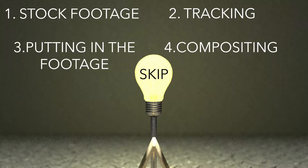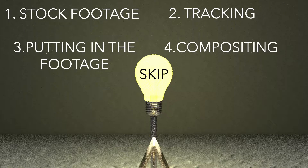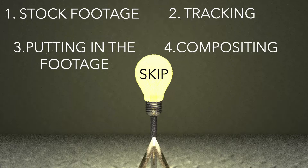Before we begin, this video is actually going to be split into four parts. The first will be finding effects in stock footage. The second will be about tracking the point of the gun so that we can apply the effect on it. The third will be actually applying the effect, and the fourth part will be compositing tweaks such as having flashes and making it look realistic in your scene. You can click on the annotations for any of these to jump to that part.